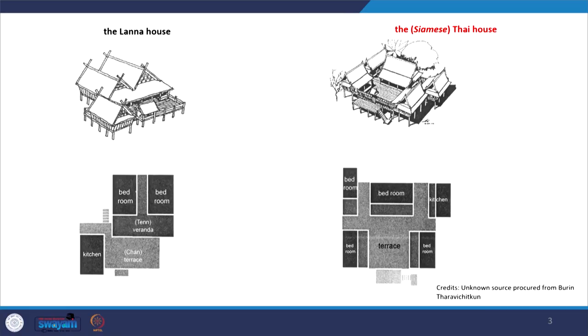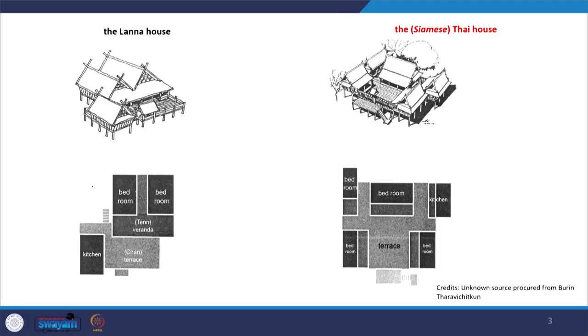Let me give you a simple example starting from a building scale. In Thai cultures, especially the 13th century, you can find the Lana house and how its characteristics have evolved in time, especially with modern demands and westernization, and how their spatial orientations have gradually changed. In the Lana house, the typical format has a kitchen, a small terrace for domestic activities, a veranda, and two rooms with a simple corridor. Whereas in the Thai house, you have a central terrace with all rooms and the kitchen oriented around it.